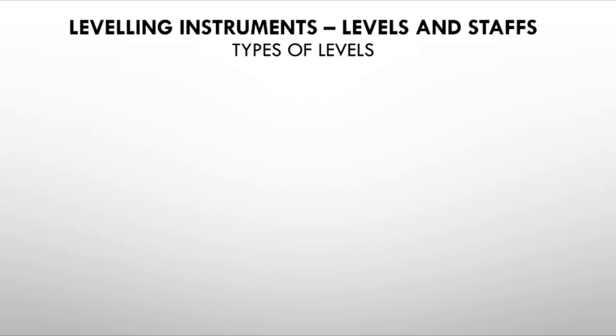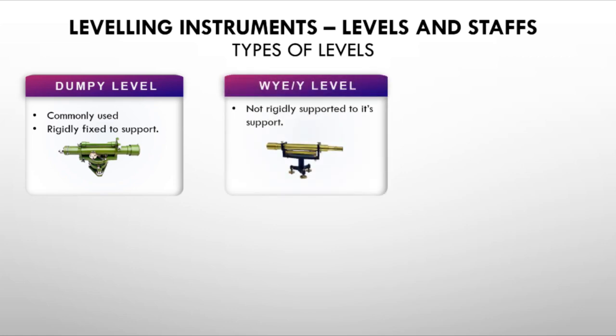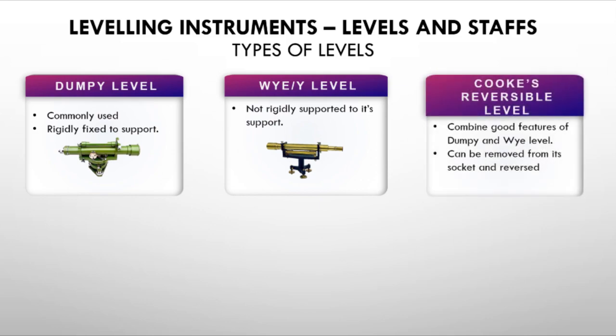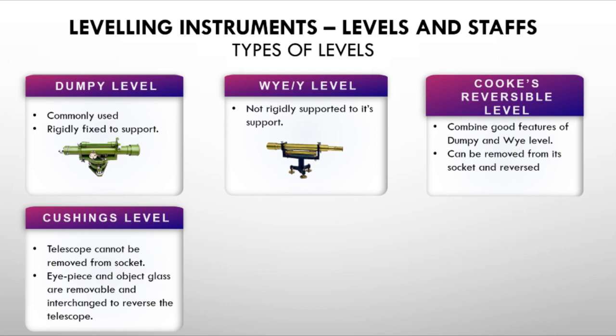Now let's talk about leveling instruments — levels and staffs. Types of levels include the Dumpy level, which is commonly used and has a rigidly fixed telescope. The Y level has a telescope that is not rigidly supported. The Cux Reversible level is a combination of Dumpy and Y level — the telescope can be removed and reversed.